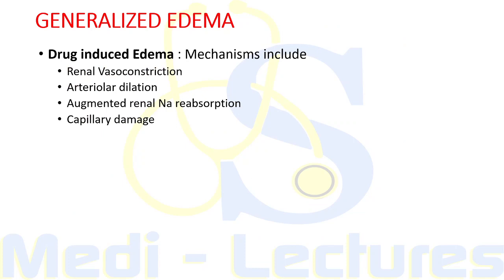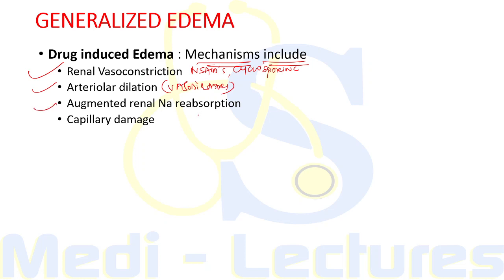Drug-induced edema is caused by a large number of widely used drugs through several mechanisms: renal vasoconstriction — as with NSAIDs and cyclosporine; arterial dilation — as with vasodilators; augmented renal sodium reabsorption — as with steroids; and capillary damage. Understanding how renal vasoconstriction, arteriolar dilation, and decreased effective arterial blood volume lead to edema explains the mechanisms of these drug effects.